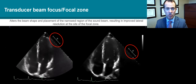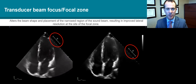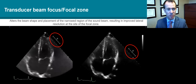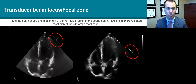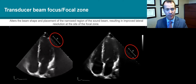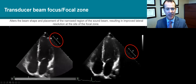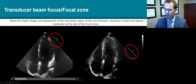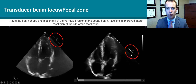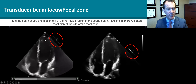The focal zone is important for optimizing image quality for a particular region. It is really the narrowest part of the ultrasound beam and gives us the best lateral resolution. Here we can see the focal zone up toward the apex on the left-hand screen, whereas the focal zone is more towards the base on the right-hand screen.